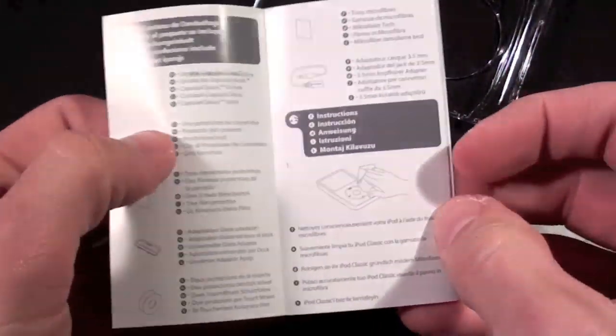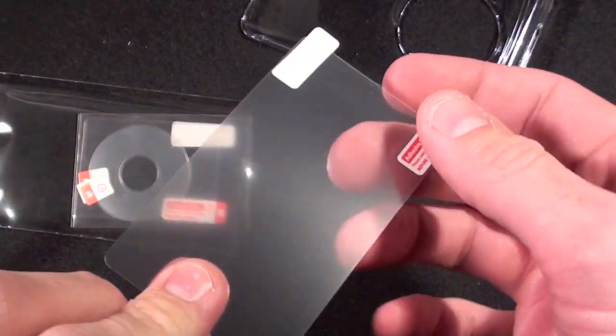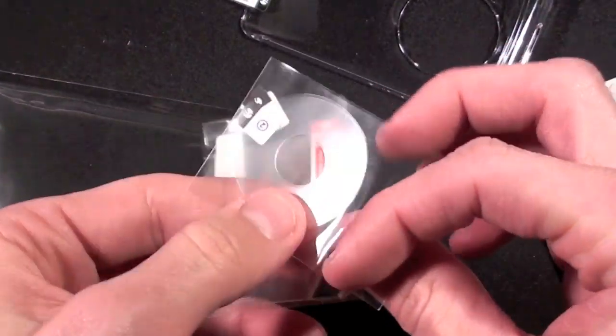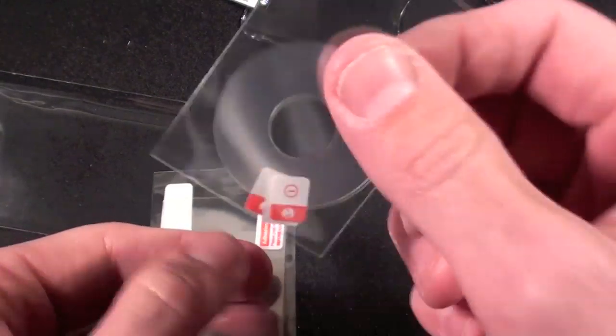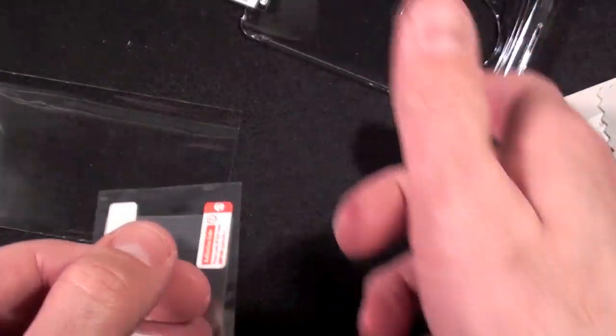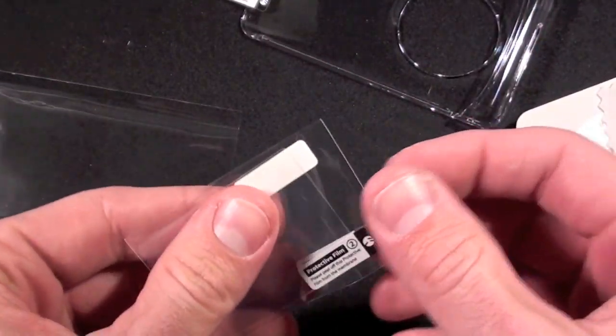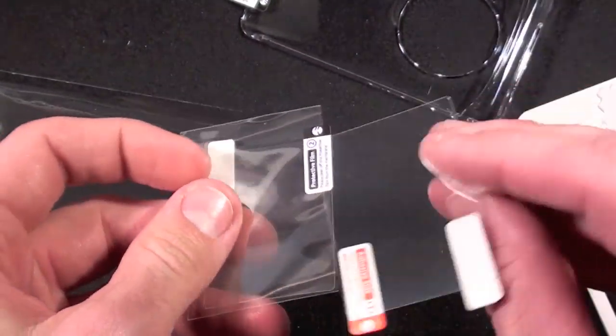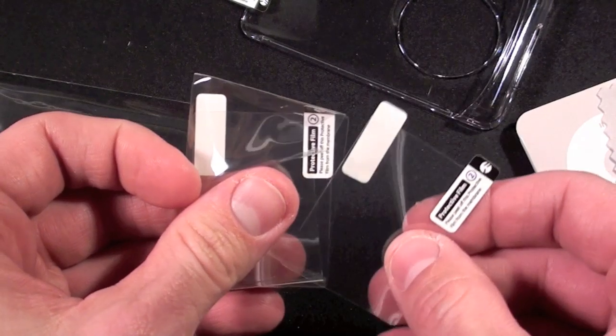We have the Capsule Classic installation guide and we have the screen shields. So we have one for the back, so this helps to protect it from being scratched. Then we have two for the click wheel, helps it from wearing out. This is actually very useful because a click wheel, because it's a matte plastic, does actually start to wear out and look shiny. And we have two for the glass front screen.